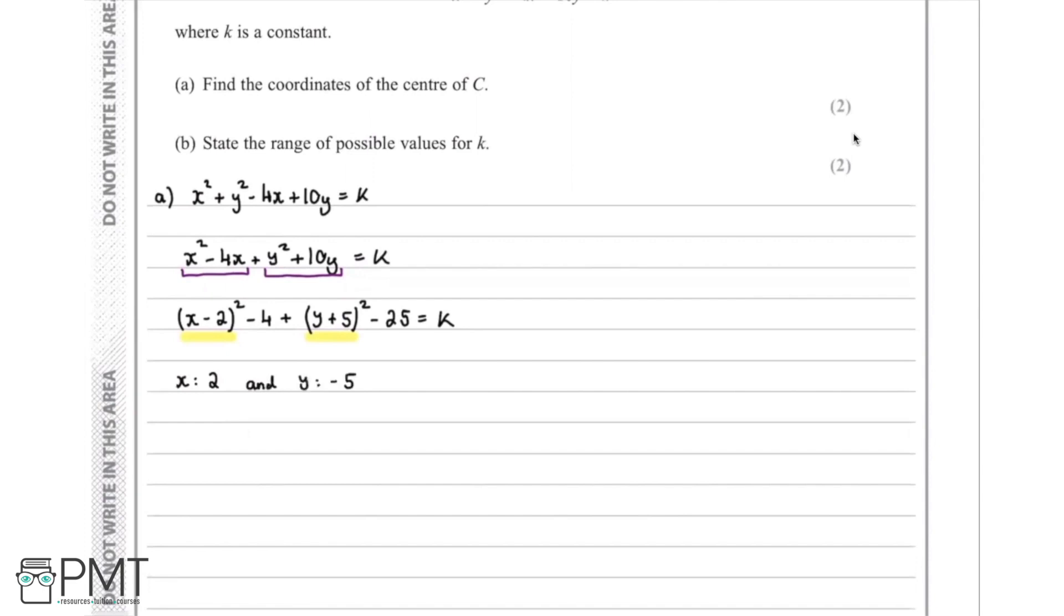Always remembering we swap the signs when we go from inside the bracket to outside the bracket there. So that means the coordinates of C are going to be 2, negative 5. And that's us completed part A.